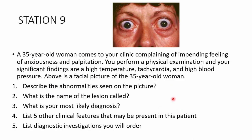Station 9: A 35-year-old woman presents with an impending feeling of anxiousness and palpitations. On examination: high temperature, tachycardia, and high blood pressure. A facial picture of the patient is shown. Describe the abnormality, name the sign, state the most likely diagnosis, list five other clinical features, and list diagnostic investigations. Take a two-second interval to consider.